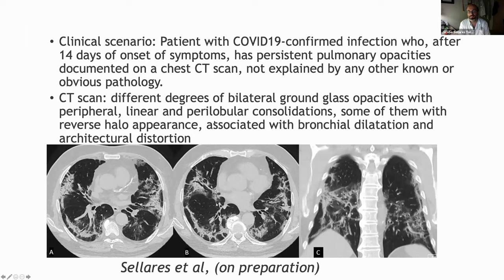We have defined this phenotype in our group that we have consistently seen in our patients — we have called it persistent pneumonitis. In patients with confirmed COVID-19 infection, a group of patients after 40 days from symptom onset have persistent pulmonary opacities not explained by other infection or pathology. Most of them have a characteristic pattern — bilateral ground glass opacities with peripheral linear and peribronchovascular consolidations, some with a reverse halo appearance associated with bronchial dilatation and architectural distortion.